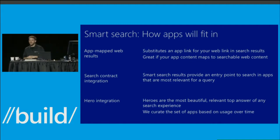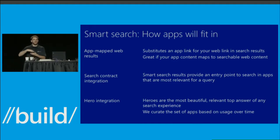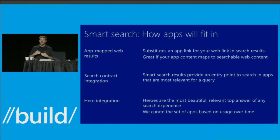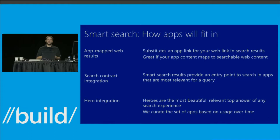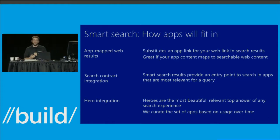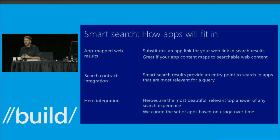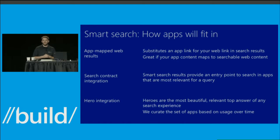The second is search contract integration. In Windows 8, 93% of users who switched scopes switched between IE, the Store, apps, files, and settings. The full list of apps supporting the search contract was too long and hard to navigate. In smart search, Bing will return entry points to search results for apps based on relevance — for example, if I'm searching for a digital camera, shopping apps I have installed will surface an entry point to launch a search inside that app.